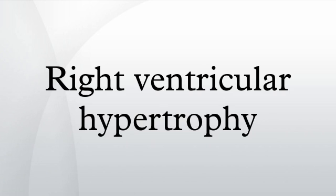Right ventricular hypertrophy is a form of ventricular hypertrophy affecting the right ventricle. Blood travels through the right ventricle to the lungs via the pulmonary arteries. If conditions occur which decrease pulmonary circulation — meaning blood does not flow well from the heart to the lungs — extra stress can be placed on the right ventricle, which can lead to right ventricular hypertrophy.